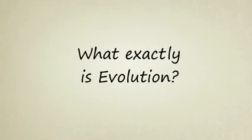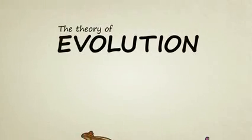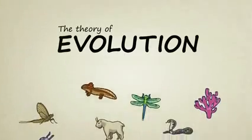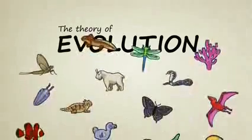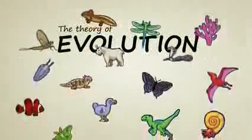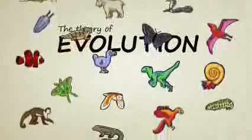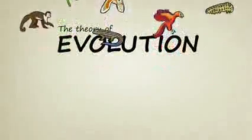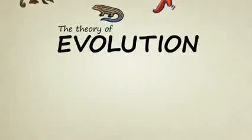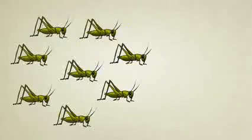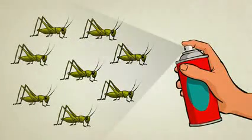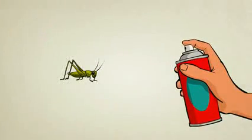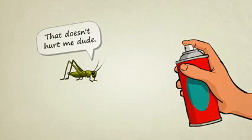What exactly is evolution? In biology, the theory of evolution doesn't tell us exactly how life began on Earth, but it helps us understand how life, once it came into existence, diversified into the many incredible forms we see now and in the fossil record. It also helps us make sense of the way in which modern creatures continue to adapt and change today.